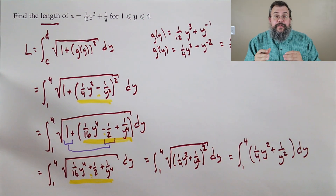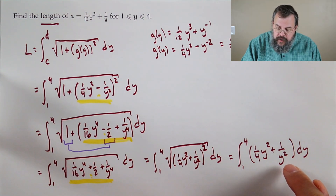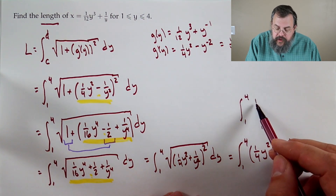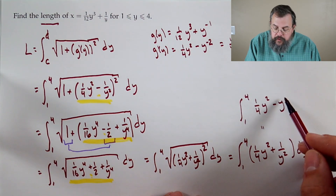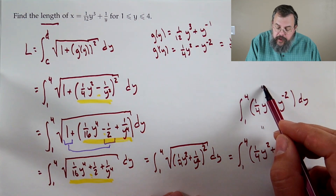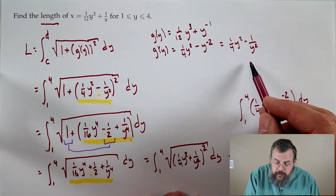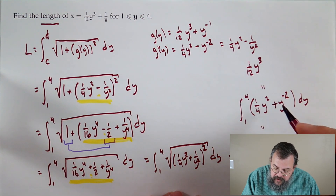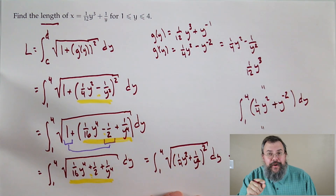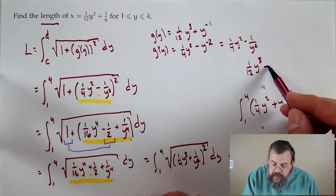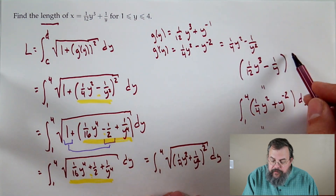Now we're happy — these are things we can integrate since they're y's to powers. Writing one over y squared as y to the minus two, we integrate: one-fourth y squared becomes one-twelfth y cubed. For y to the minus two: add one to the exponent giving minus one, divide, so this becomes minus y to the minus one, or minus one over y. We evaluate from one to four.